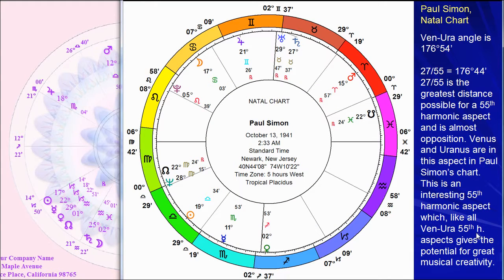Paul Simon, here's his chart. Paul Simon, of course, is an amazing songwriter as well as singer and guitarist. What are we going to expect? Well, he's unusually creative. We're going to expect 55th harmonic, probably also 11th harmonic, probably some kind of Venus-Uranus — maybe not Venus-Uranus-Pluto, because he's not as intense and cathartic as many rock musicians. He's got a folk style involved.